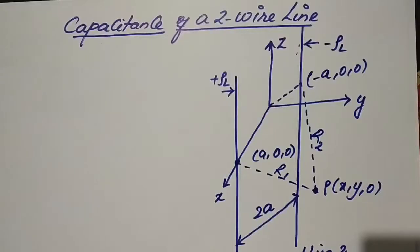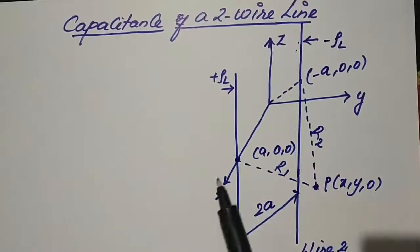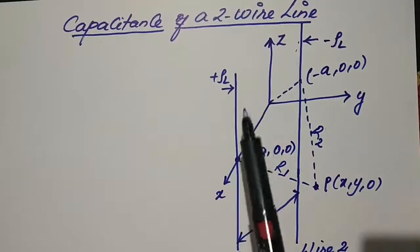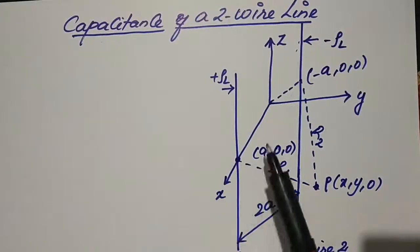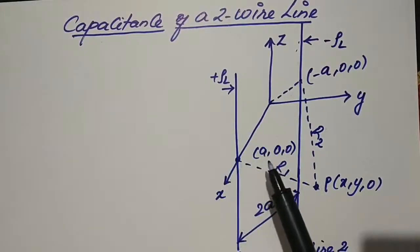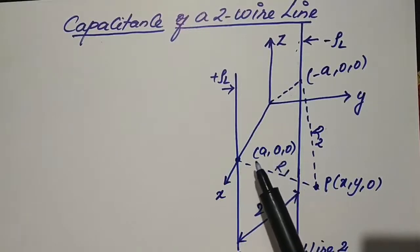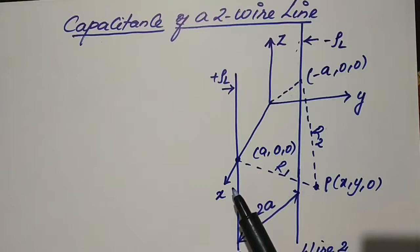Next we'll start with the new topic: capacitance of two-wire line. Let us consider the two-wire line which forms two parallel plate capacitors. The radius of the cylinder is always very small.